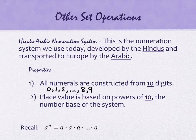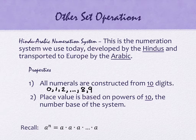Any idea why we have a base 10 number system? Because it works — but there are other ones that work okay too, so that's not the only reason. Because we have 10 fingers — literally, that's why. So if God had made us without thumbs, we would have a base 8 number system. That's why we have what we have.